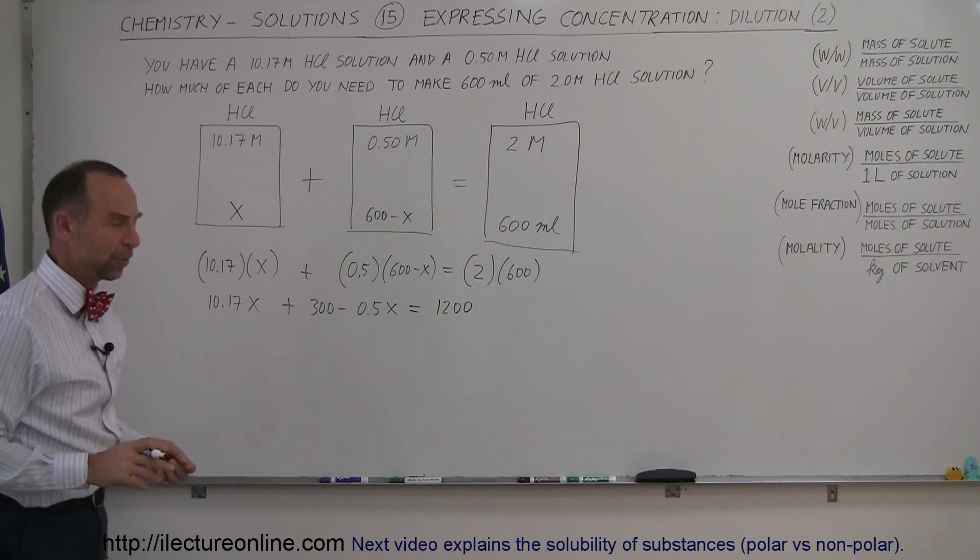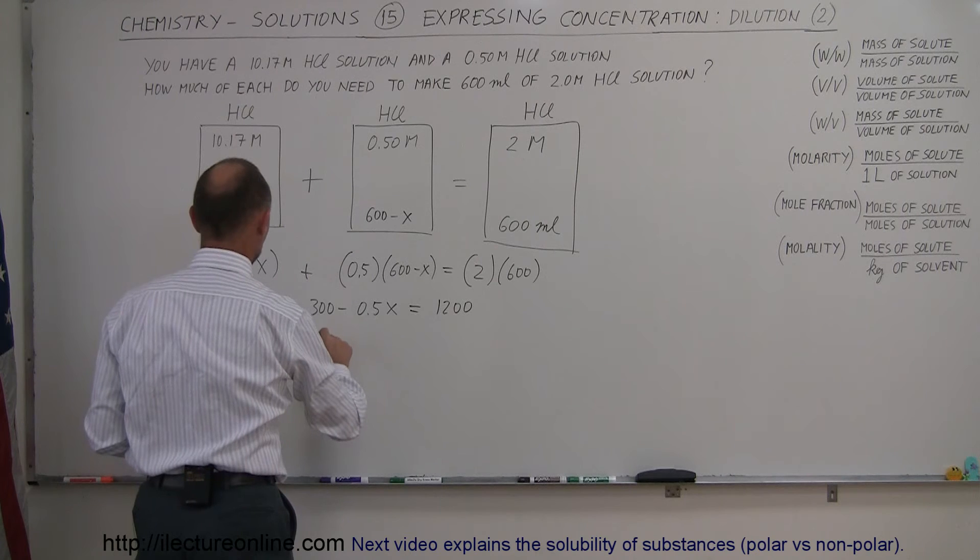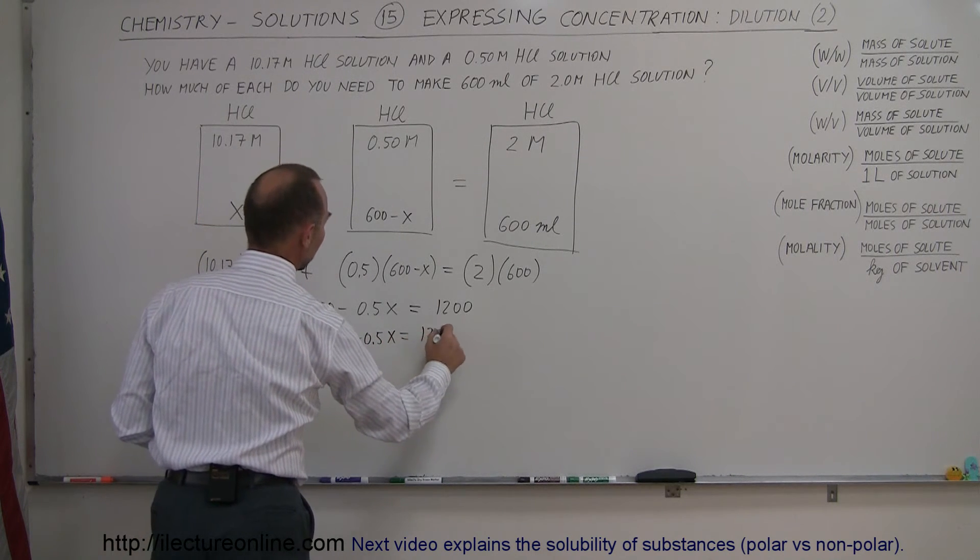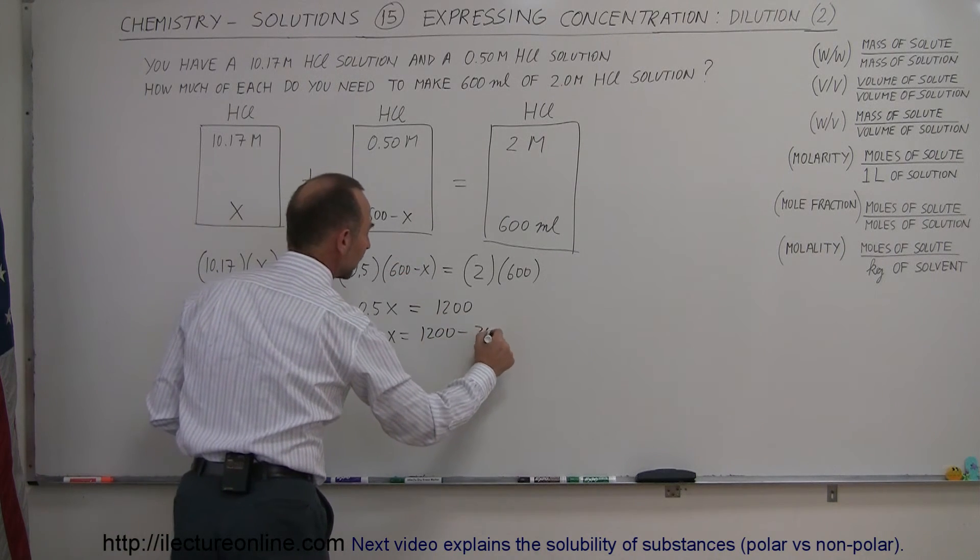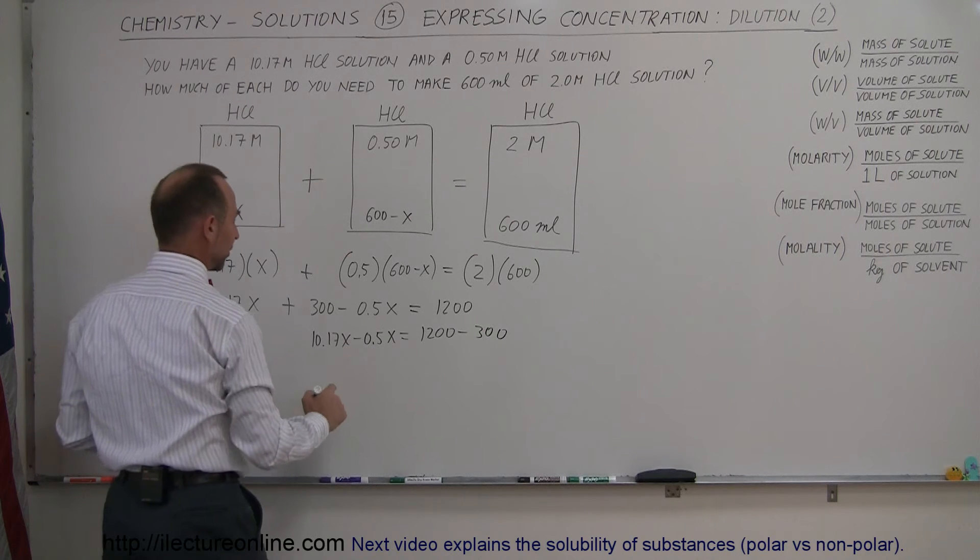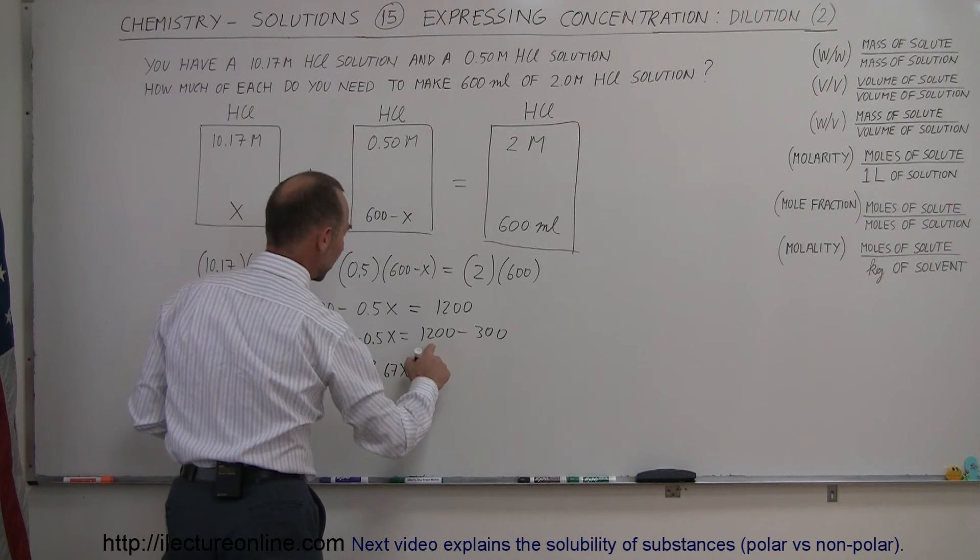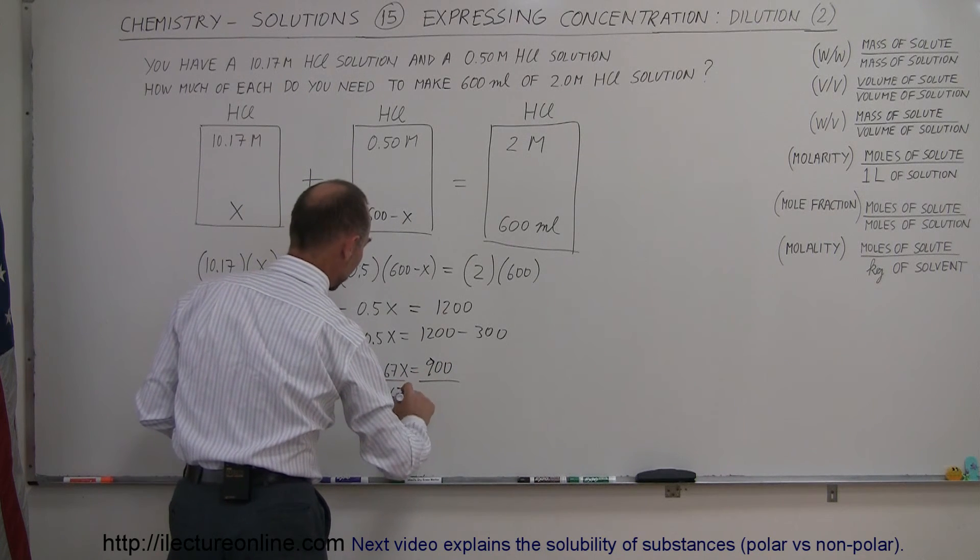The next step is to move all the numbers to the right side, leave everything with an x on the left side. So we have 10.17x minus 0.5x equals 1200. And of course when we move the 300 to the other side, it becomes a minus 300. Subtracting this from that we get 9.67x equals 1200 minus 300, which is 900, and divide both sides by the coefficient in front of the x.